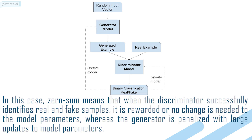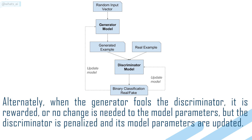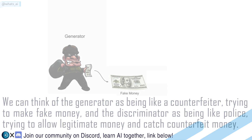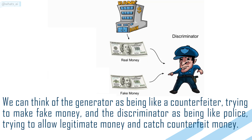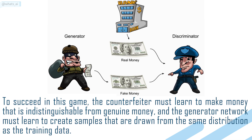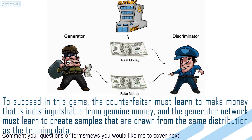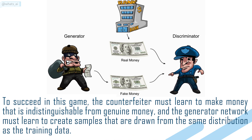In this case, zero-sum means that when the Discriminator successfully identifies real and fake samples, it is rewarded, or no change is needed to the model's parameters, whereas the Generator is penalized with large updates to the model parameters. Alternately, when the Generator fools the Discriminator, it is rewarded, but the Discriminator is penalized and its model parameters are updated. We can think of the Generator as being like a counterfeiter trying to make fake money, and the Discriminator as being like police trying to allow legitimate money and catch counterfeit money. To succeed in this game, the counterfeiter must learn to make money that is indistinguishable from genuine money, and the Generator Network must learn to create samples that are drawn from the same distribution as the training data.